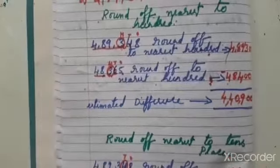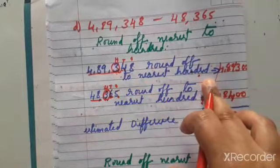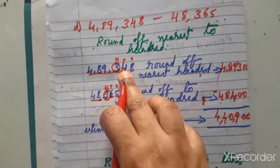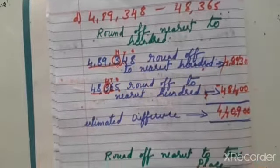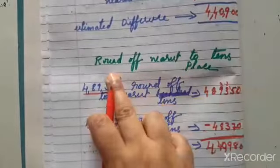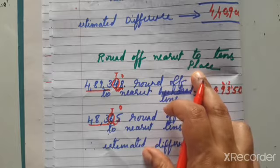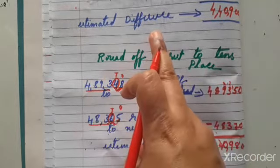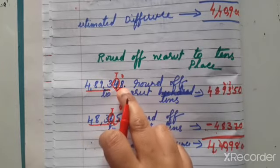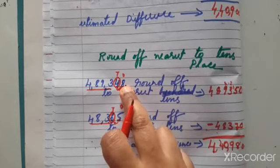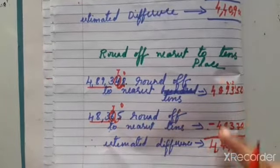Understood, children? First, we have to round off to nearest hundred place — check the place value, knock the door. If five or more than five, he can help; these numbers remain the same, and the helper becomes zero. Then find the difference — round off difference, you have to minus it. Now round off nearest to tens place. Both questions ask for round off nearest to hundred and also closest estimate to round off nearest to tens — both are one and the same. Once the door is knocked, that number will become zero. Then find the difference.